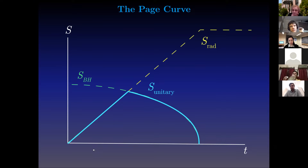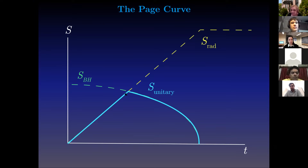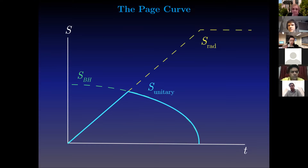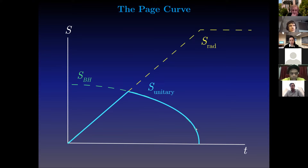The Page curve is this unitary curve. It tracks the entropy of the radiation, which starts at zero and increases, but at some point after the black hole has evaporated half its mass, the late radiation has to be purified by what we already have in the system, because if our evolution is overall unitary, the two subsets had better purify one another. So eventually the entropy has to start decreasing and go down to zero. This curve — the Page curve or the unitary curve — is a litmus test, a smoking gun signal for unitary evolution of the system.